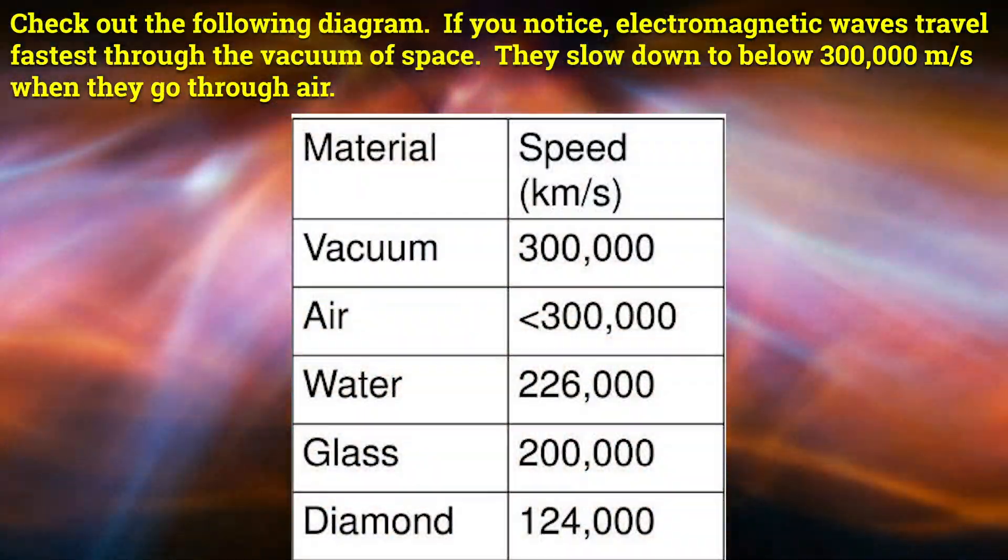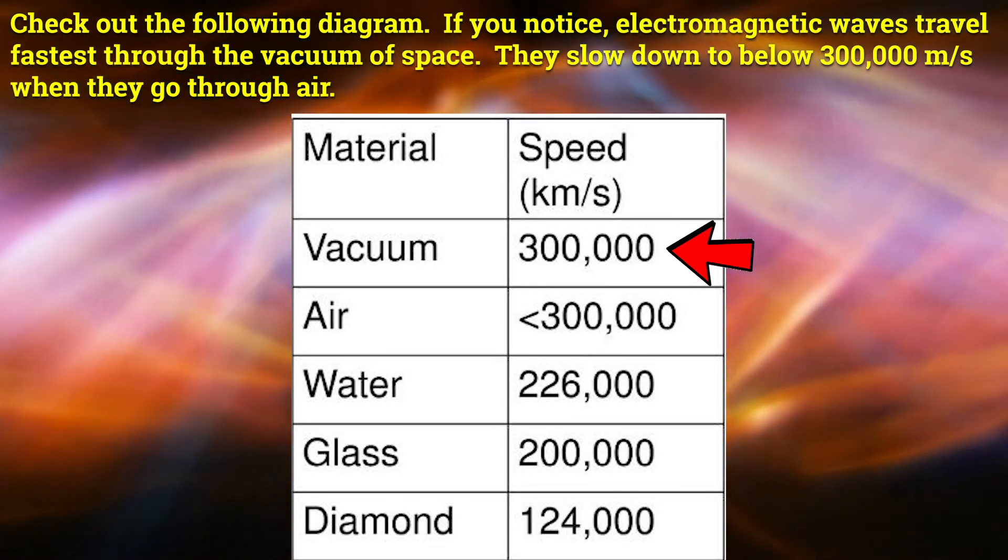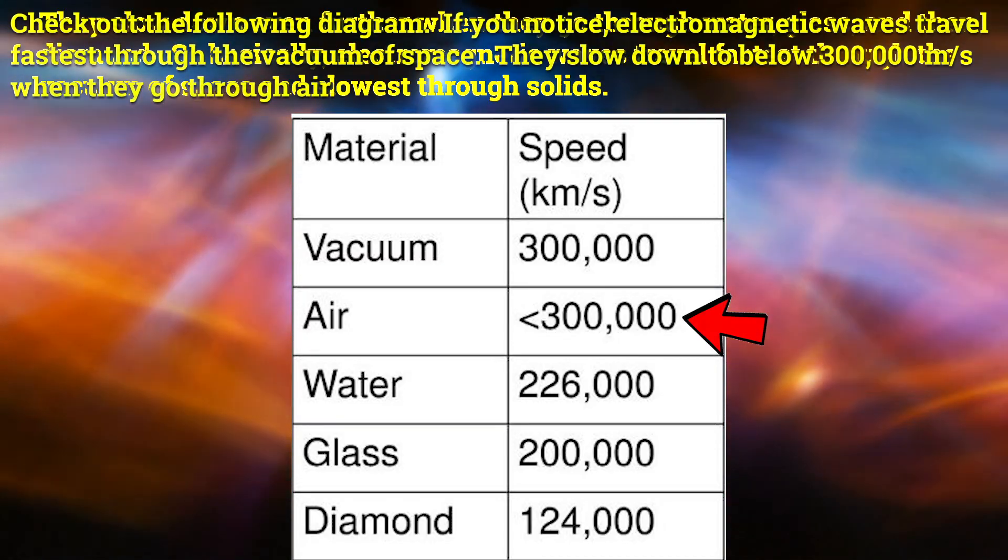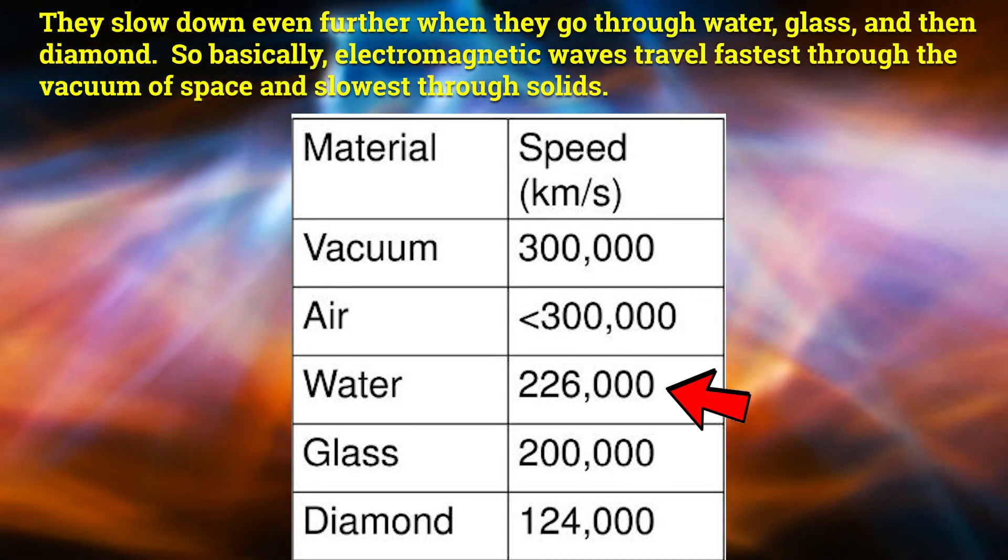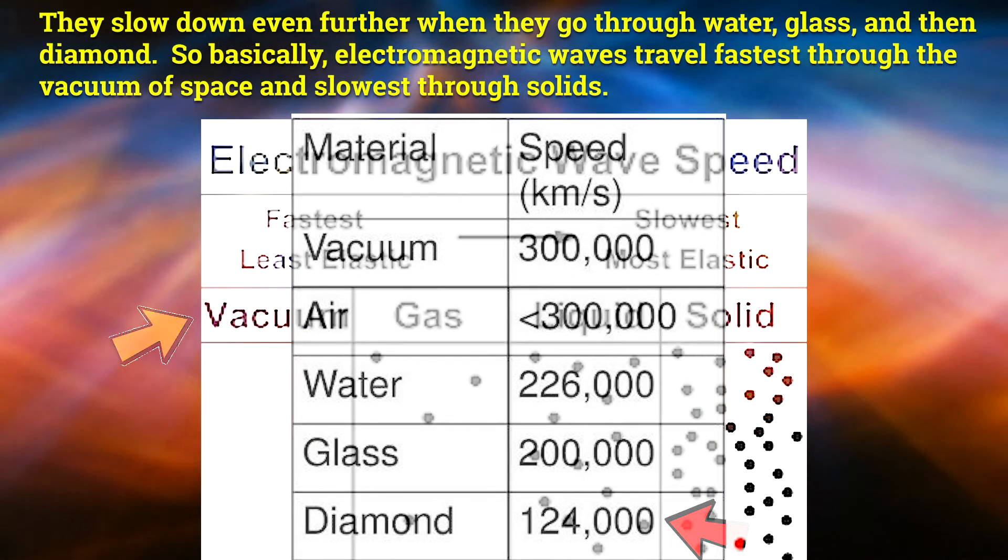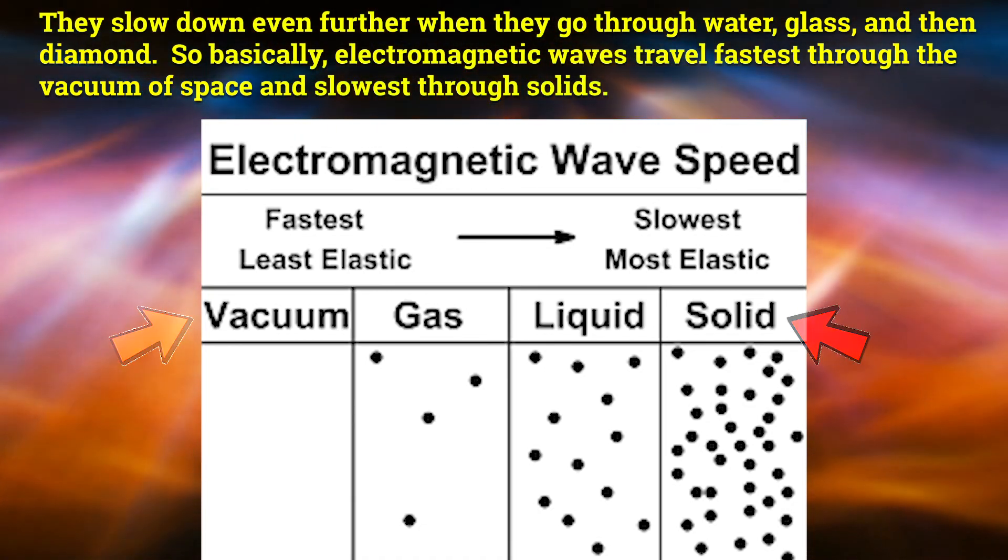Check out the following diagram. If you notice, electromagnetic waves travel fastest through the vacuum of space. They slow down to below 300,000 kilometers per second when they go through air. They slow down even further when they go through water, glass, and then diamond. So basically, electromagnetic waves travel fastest through the vacuum of space and slowest through solids.